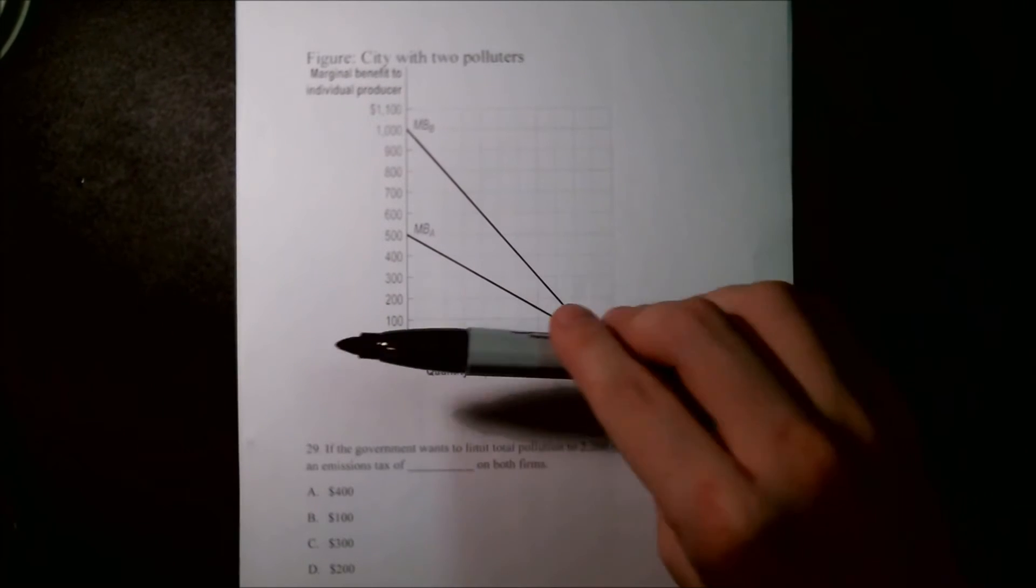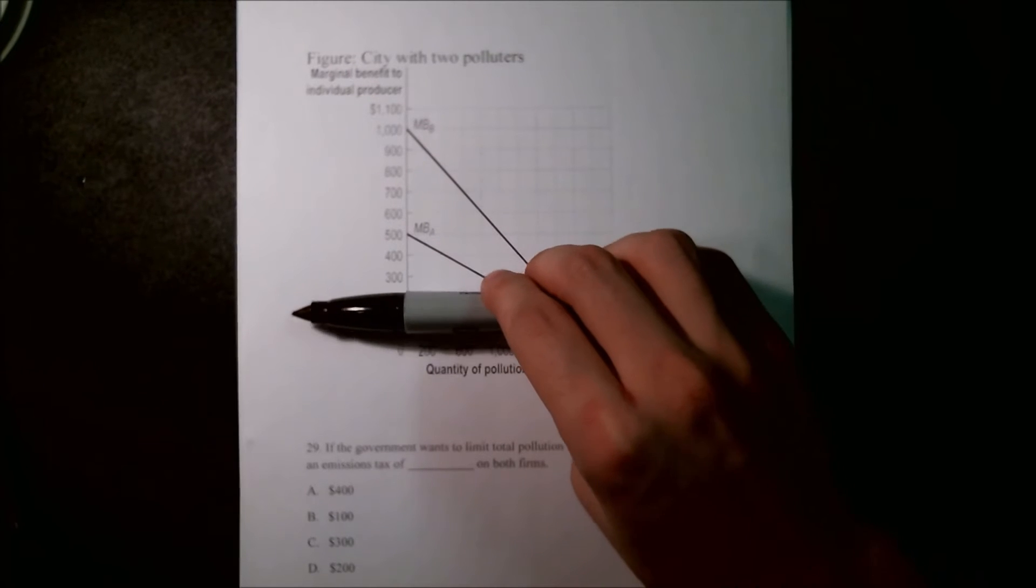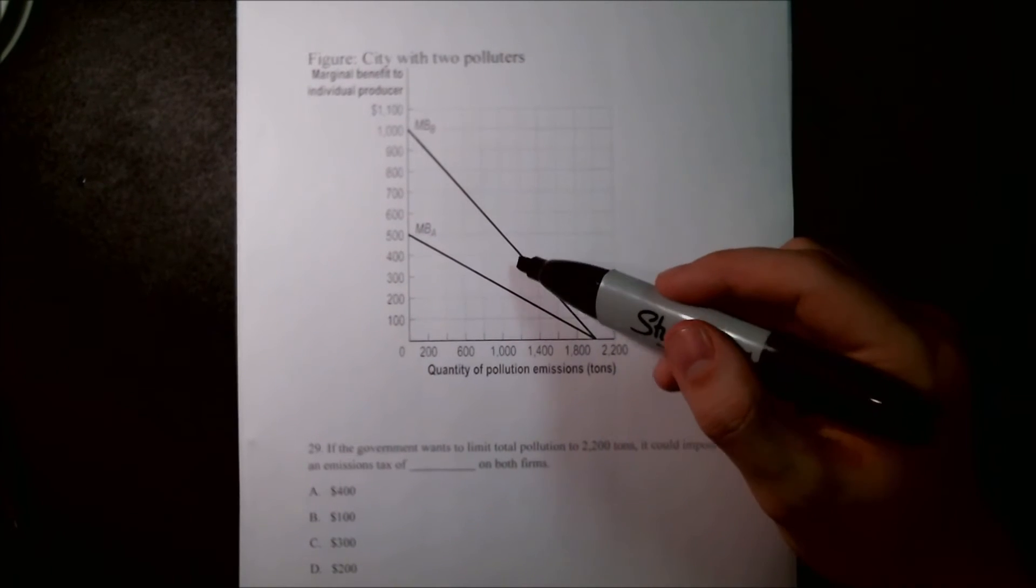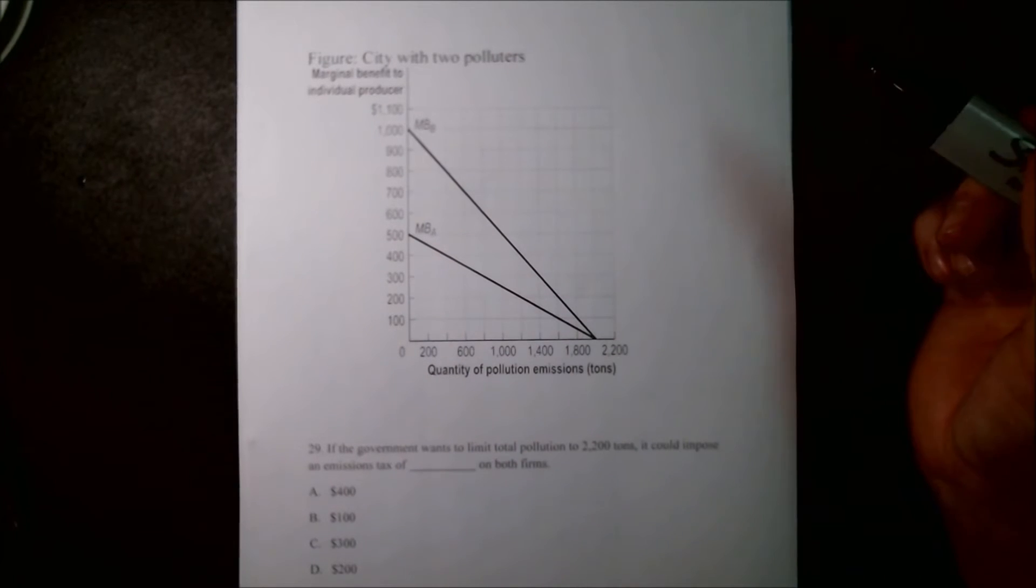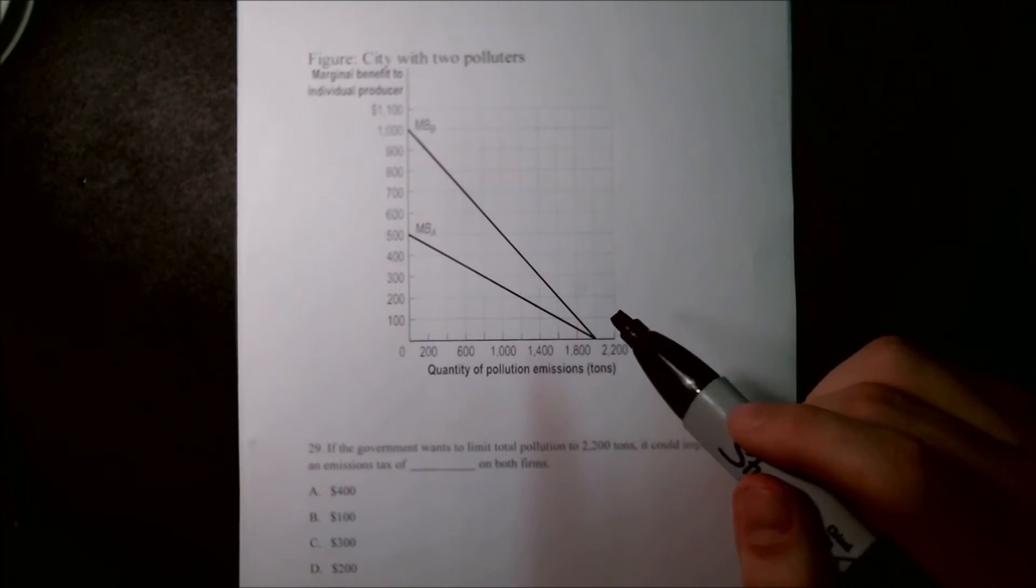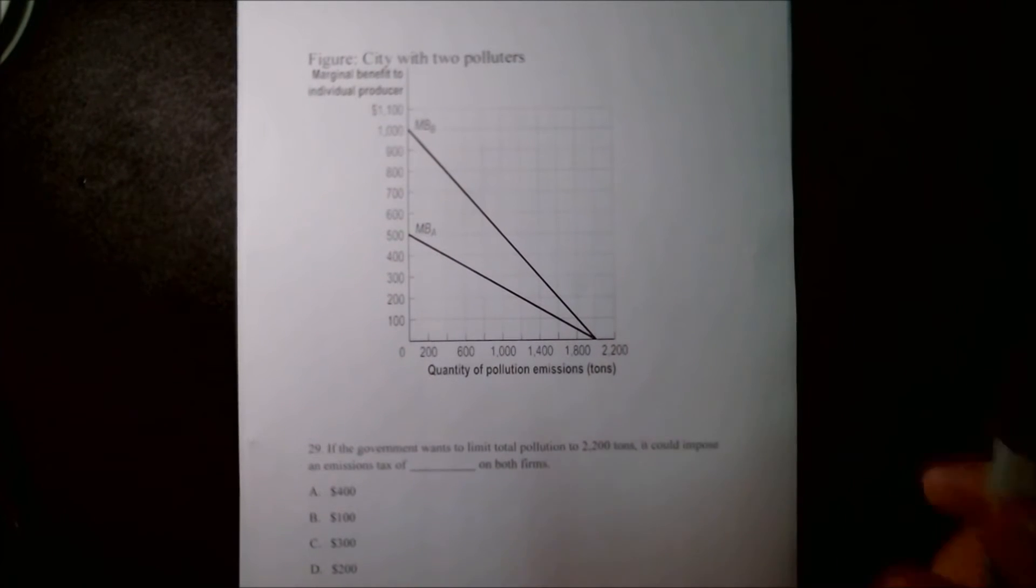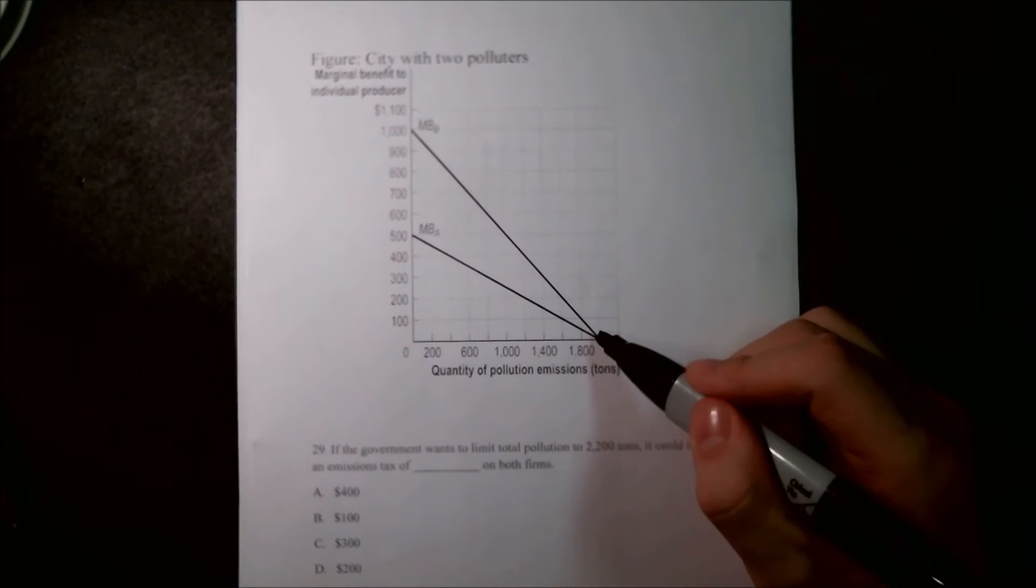So we're basically trying to take it from here to either here, here, here, or here, and then looking at where they line up for their amount of pollution created. They're currently each producing 2,000 tons, meaning there's a total in this market of 4,000 tons being generated at this point right here.